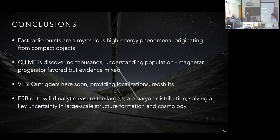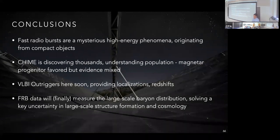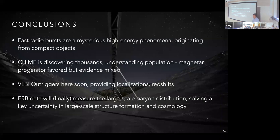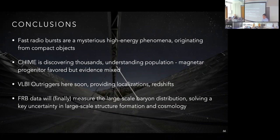Question: In the program to measure the IGM, if FRB formation rates correlate with galaxy star formation or feedback rates, how does that complicate things? Answer: You do the same thing as in galaxy shear weak lensing — ensure your background FRBs are far away in redshift from the foreground galaxies you're correlating with. That wipes out the clustering term and you're fine. FRBs are indeed expected to be clustered with galaxies since they live in them, but the separation in redshift handles it.